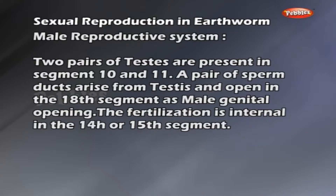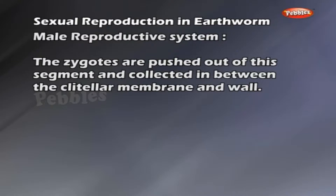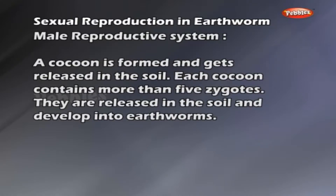The fertilization is internal, occurring in the 14th or 15th segment. The zygotes are pushed out and collected between the clitellar membrane and wall. A cocoon is formed and gets released in the soil. Each cocoon contains more than 5 zygotes, which develop into earthworms.